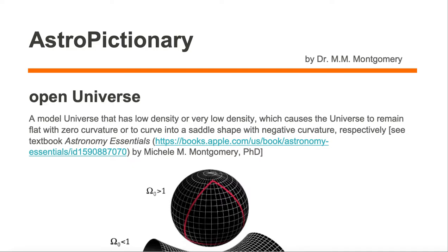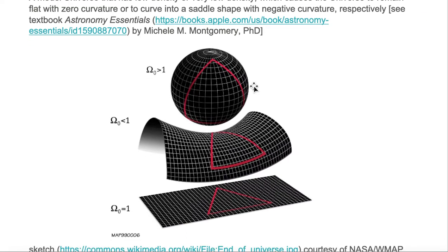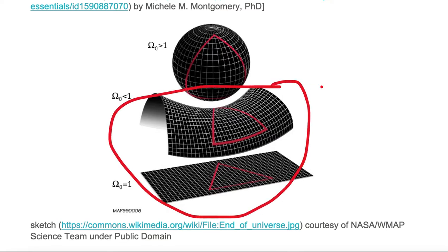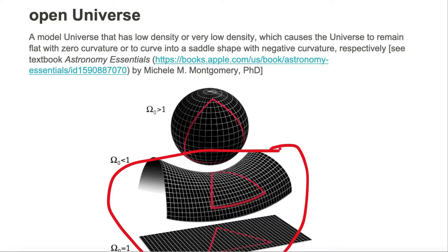An open universe is a model universe that has low density or very low density, which causes the universe to remain flat with zero curvature or to curve into a saddle shape with negative curvature, respectively. Below are three examples of model universes. The bottom two are open universes.